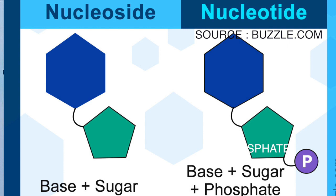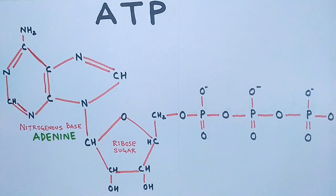Nucleoside is a combination of nitrogenous base plus ribose sugar, while the nucleotide is the combination of nitrogenous base plus ribose sugar plus phosphates attached to the molecule. So this is the molecular structure of ATP molecule, plus we have also differentiated the nucleoside with nucleotide.